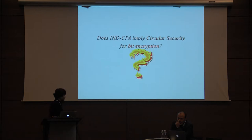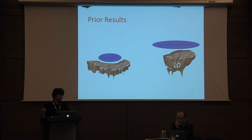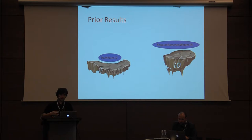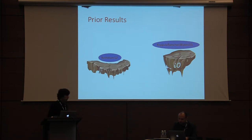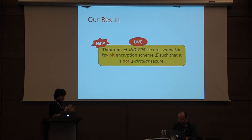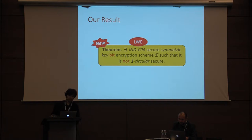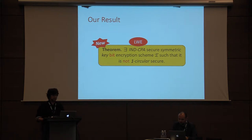That is the question we're trying to answer in this talk. We already have some separations from strong assumptions like idealized multilinear maps and indistinguishability obfuscation. But in this work, we want to answer this question from more standard assumptions. Our result is: we construct an n-CPA secure symmetric key bit encryption scheme that is not 1-circular secure, proved under the learning with errors assumption.